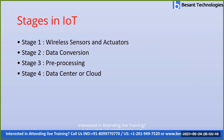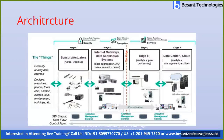When going into IoT, there are four different stages. Stage one is sensors and actuators, stage two is data conversion, stage three is pre-processing, and stage four is data center or cloud. This is the architecture of IoT that we need to follow before starting with IoT.